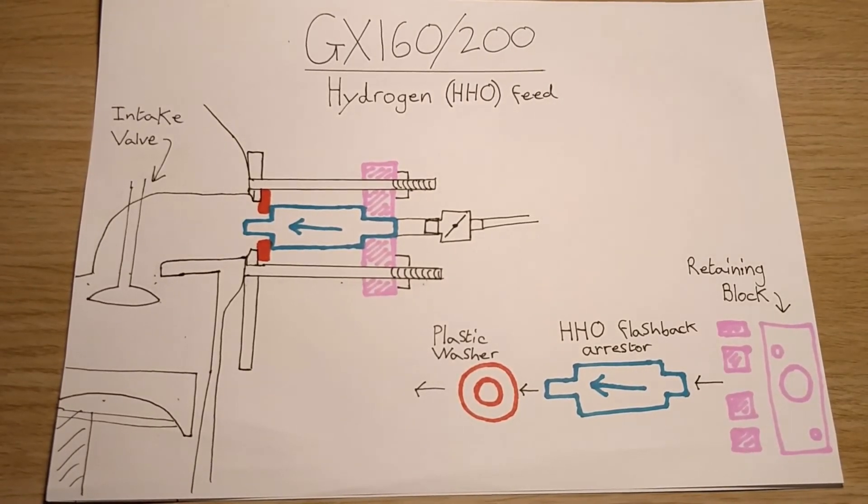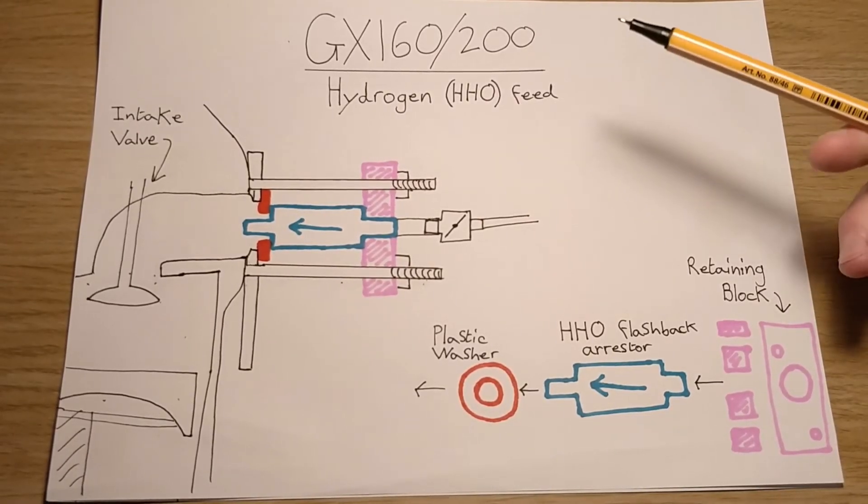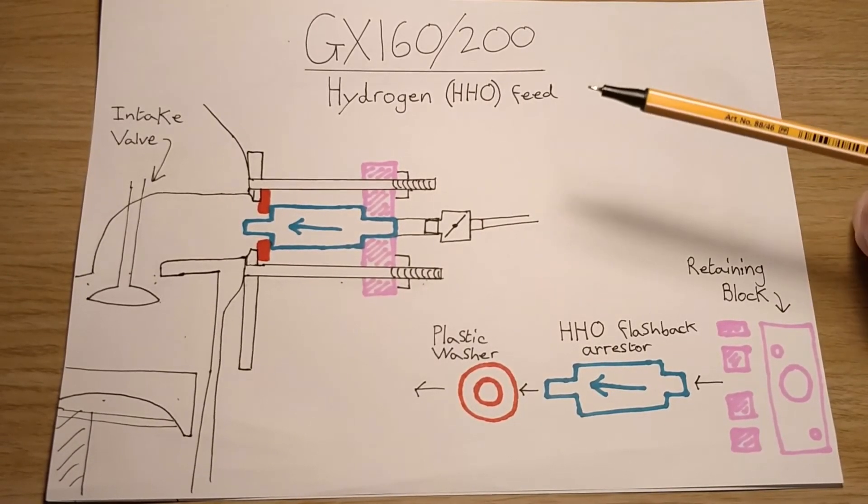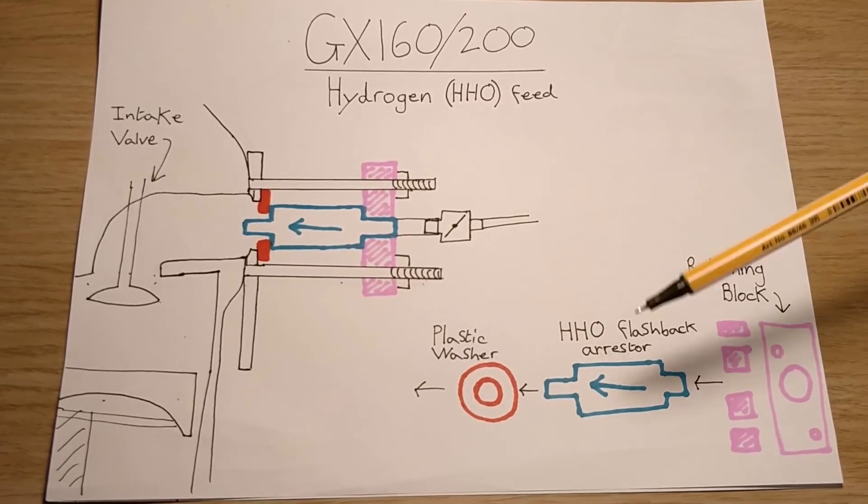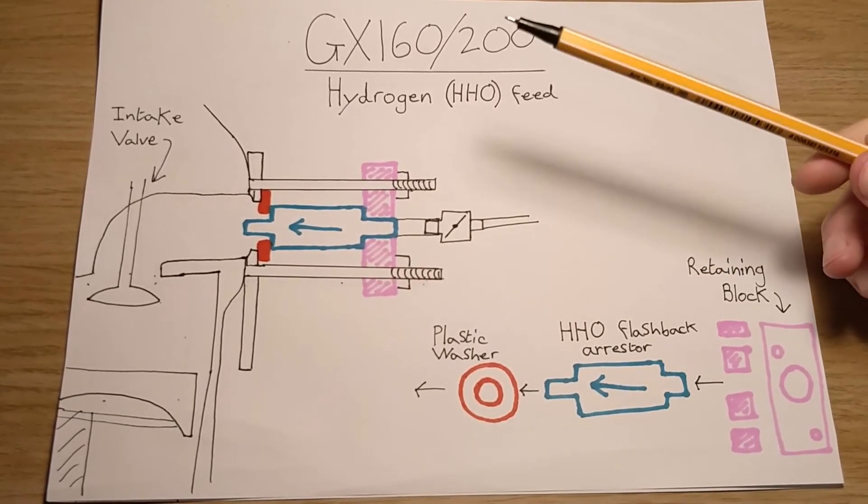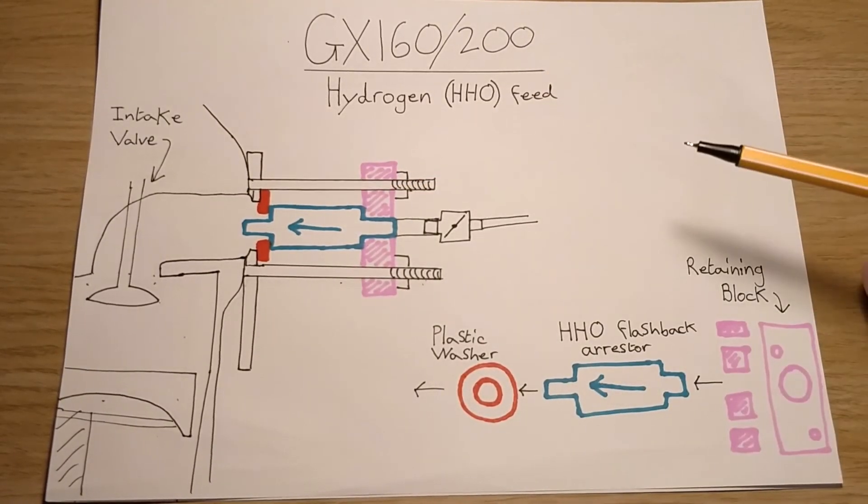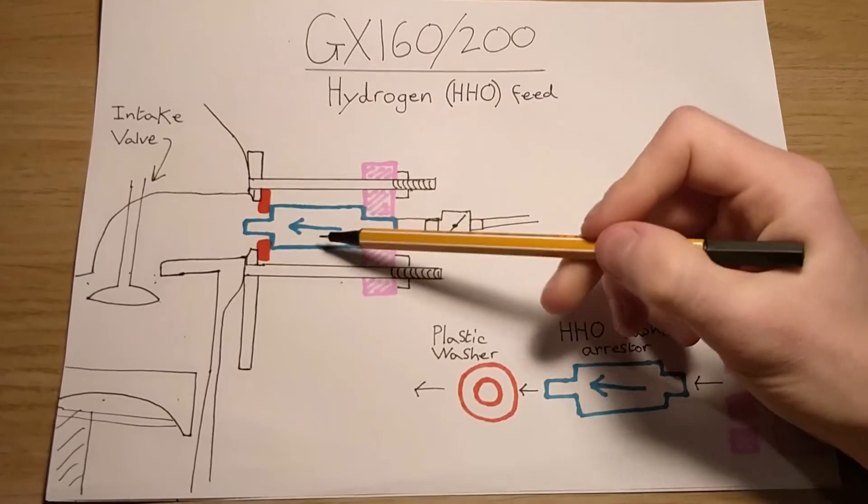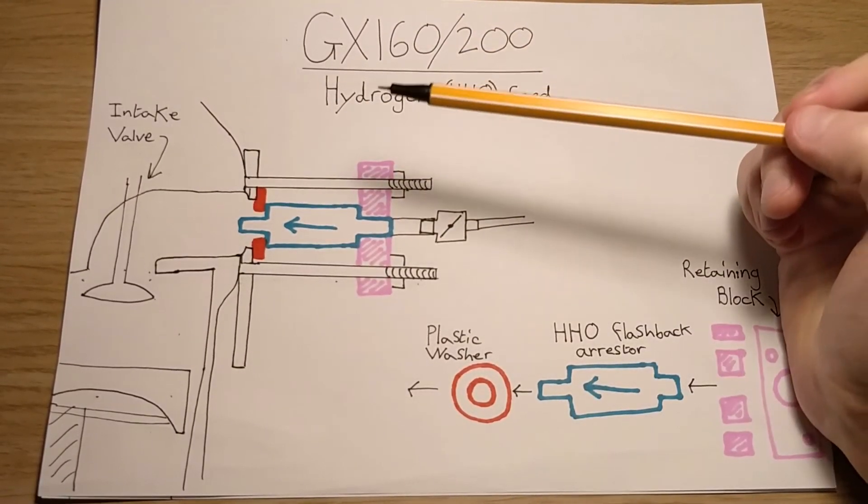So that's essentially it with this design. It's very, very simple, it works, it's very primitive. But essentially all it is is a plastic washer, a flashback arrester, and some sort of retaining block with a ball valve to govern the flow of hydrogen going into the engine. If this gets hot, you obviously, it's another sign that it is backfiring, but they can operate under high temperature anyway, so that's usually not an issue.